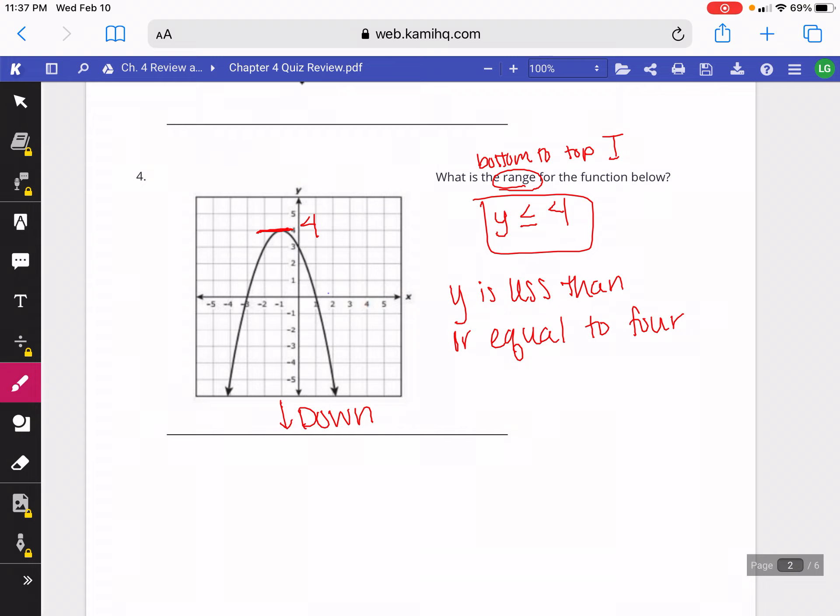If the graph had been going up, it would have been greater than or equal to. But because it's going down, it's less than or equal to. And if it had asked for domain - so like this here was range - if it asked for domain, we learned that the domain for quadratic functions is all real numbers. And that's because this graph keeps going left and right, so it would contain any possible x value since it keeps going left and right.